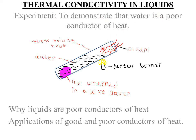In this experiment, the apparatus are arranged as shown in the diagram. The apparatus required is a glass boiling tube filled with some water, a source of heat such as a Bunsen burner, and ice which is wrapped in a wire gauze at the bottom of the tube.